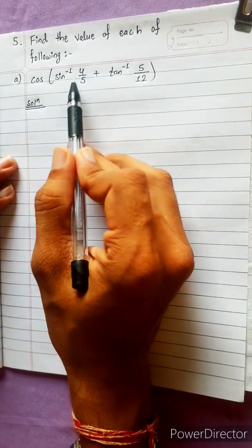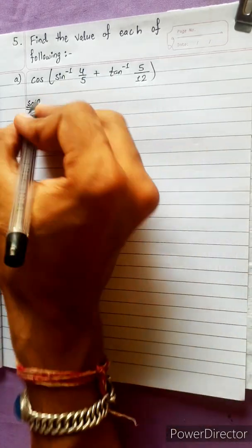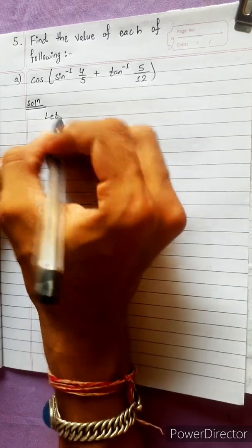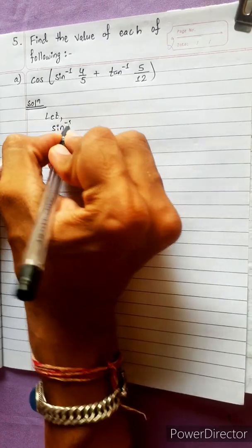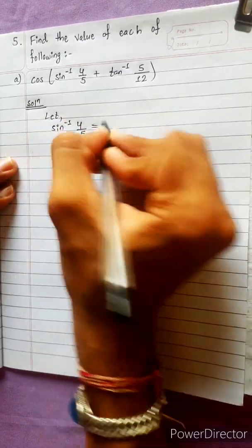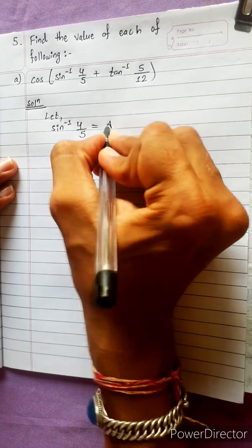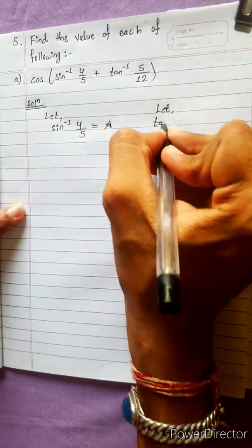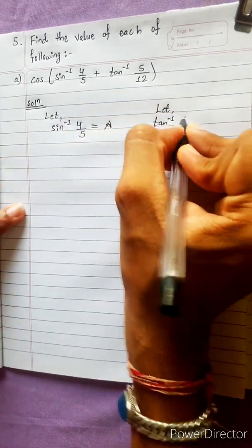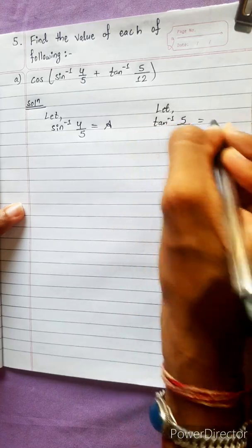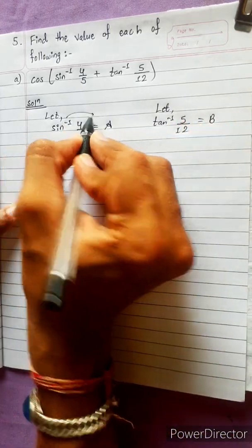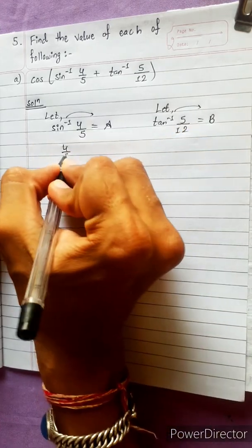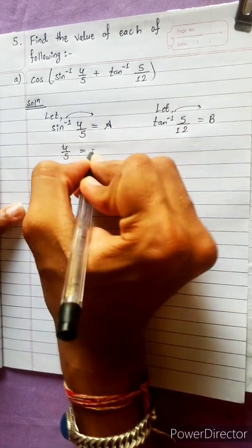Welcome. We will find the value of each of the following. We start by letting sin⁻¹(4/5) = A, and we will also find the value of tan⁻¹(5/12).